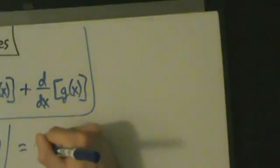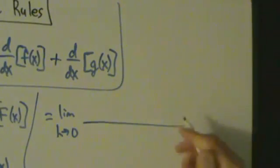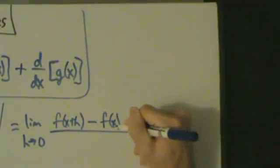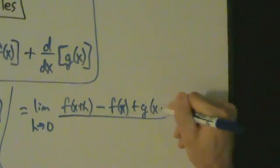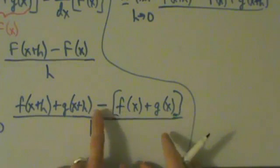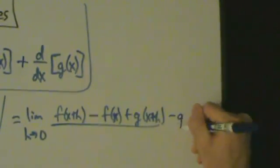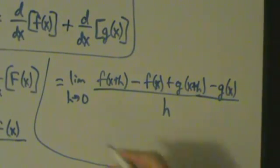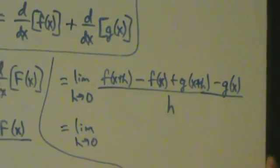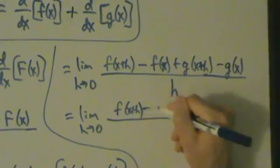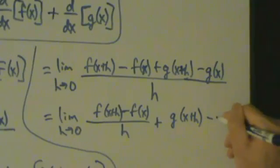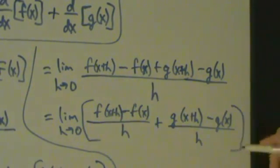After distributing, we get the limit as h goes to 0 of f(x+h) minus f(x), plus g(x+h) minus g(x), all over h. Now let's split this into two separate fractions. We have the limit as h goes to 0 of [f(x+h) minus f(x)] over h, plus [g(x+h) minus g(x)] over h, with the limit applying to everything.